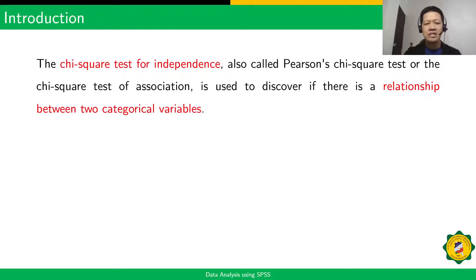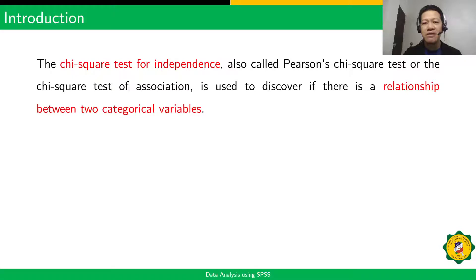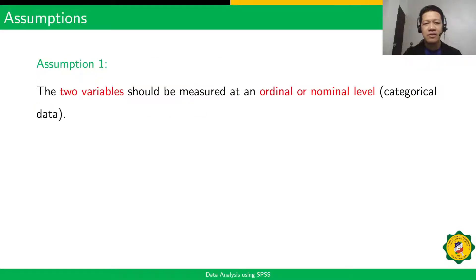The CHI-squared test for independence, also called Pearson's CHI-squared test or the CHI-squared test of association, is used to discover if there is a relationship between two categorical variables. For our assumptions, the two variables should be measured at an ordinal or nominal level — these are the categorical variables or data.